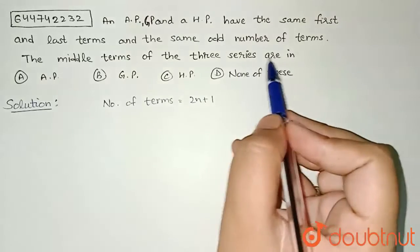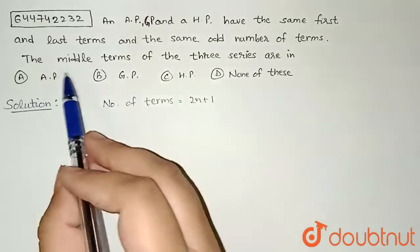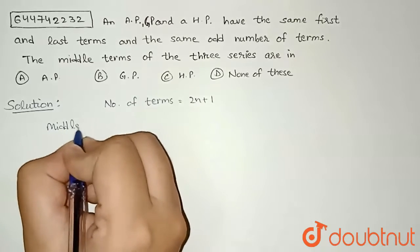the middle terms of these three series will be in what? Either AP, GP, or HP. So first of all, let us see what will be the middle terms. For AP, let us see what will be the middle